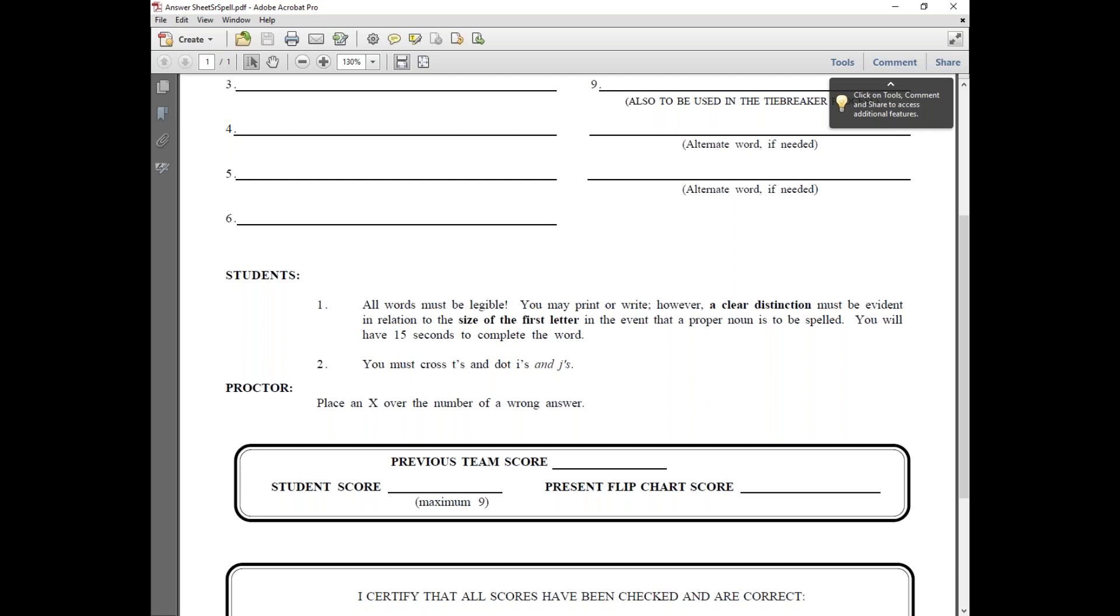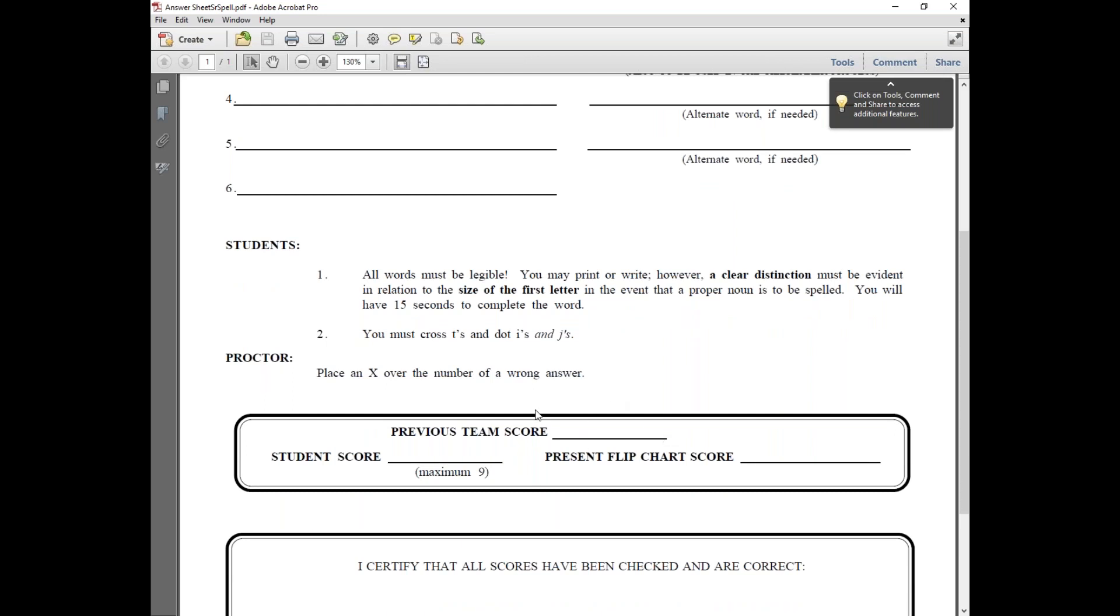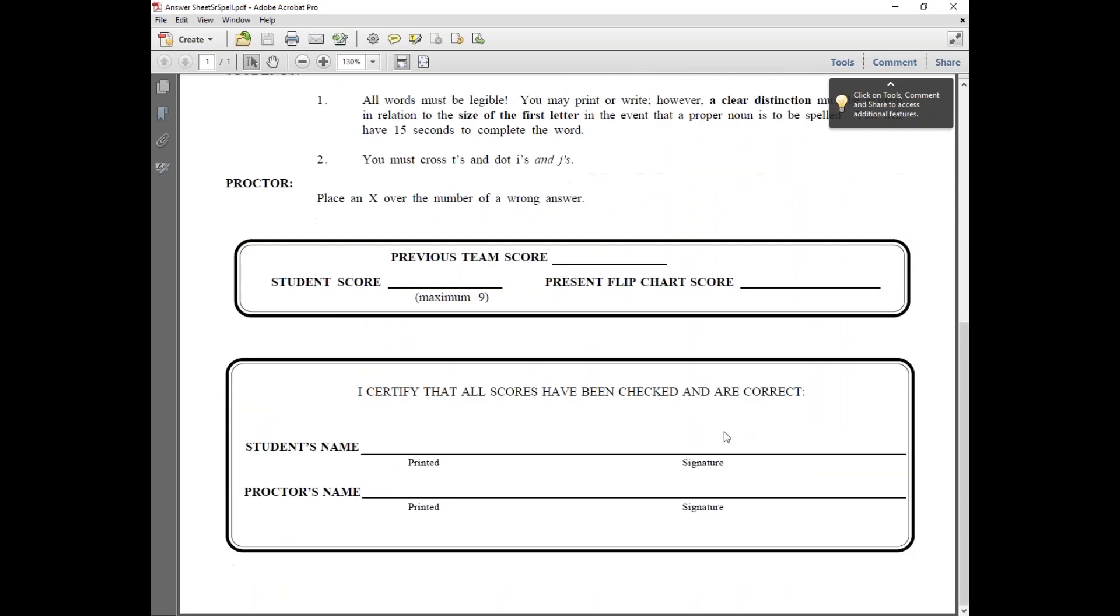They have to cross T's, dot I's and dot J's for them to be counted correct. Some schools will still use flip charts, other schools will use an electronic display, but it's just the current round score that they are referencing there. At the end of each round, make sure that this score is correct. You need to verify that this score is the same as the electronic score and have everybody sign the sheet. The student must both print and sign your names.